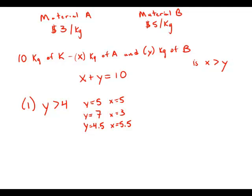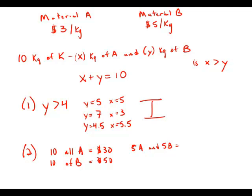So statement number one is insufficient. Statement number two: the total cost of 10 kilograms of material K is less than 40 dollars. Well, that's interesting. Let's think about this. If we had 10 kilograms of all A, that would be 30 bucks. If we had 10 kilograms of all B, that would be 50 bucks. If we had exactly half and half—five kilograms of A and five kilograms of B—that would be 40 bucks.